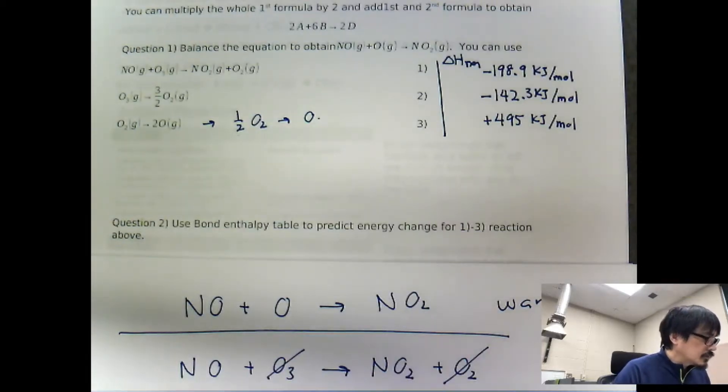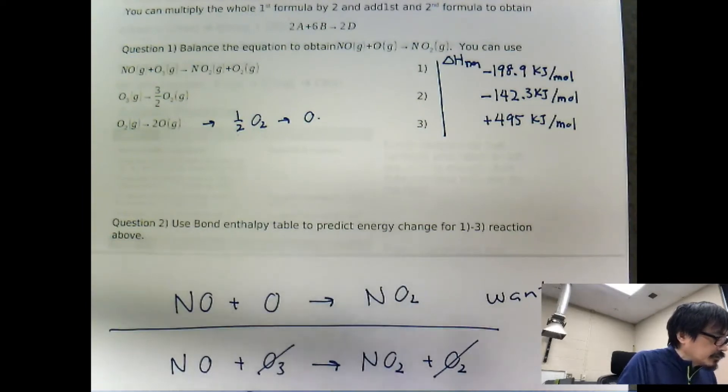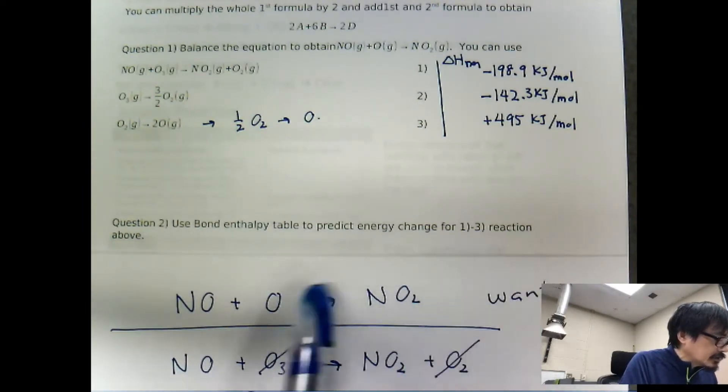All right, for question number two: use bond enthalpy table to predict energy change for reactions one through three above.